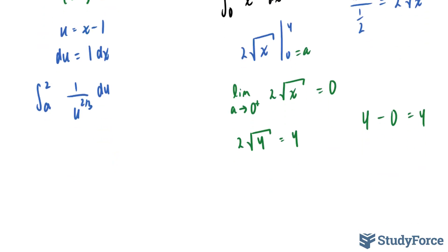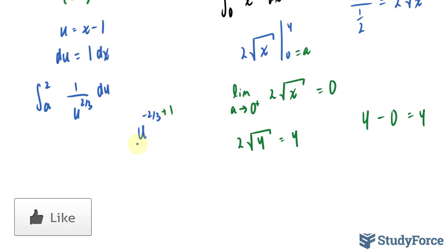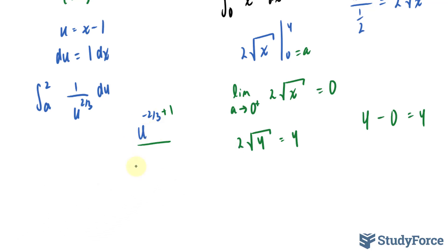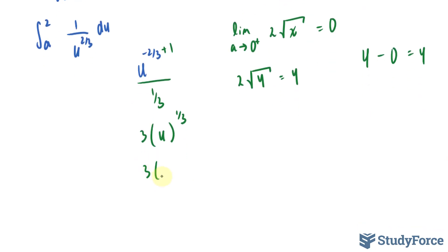Taking the integral of one over u to the power of two over three, I'll rewrite it as u to the power of negative two over three, then add one to the exponent and divide by that sum. Negative two over three plus one equals positive one over three, so this becomes three u to the power of one over three. I'll change u back to x minus one, giving three times x minus one to the power of one over three.